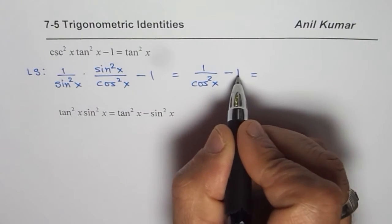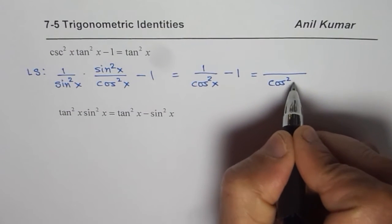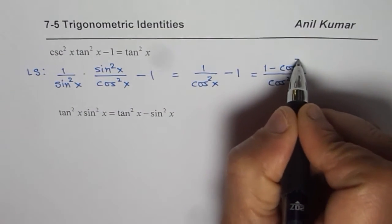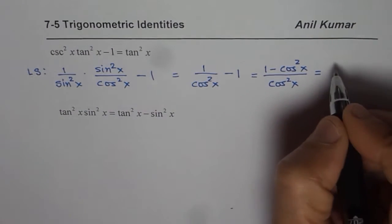Now we can take common denominator which is cos square x. So we get cos square x in the denominator and we have 1 minus cos square x. Now what is 1 minus cos square x? That is sin square x.